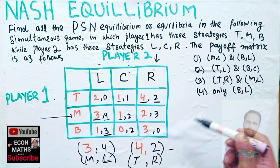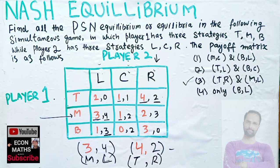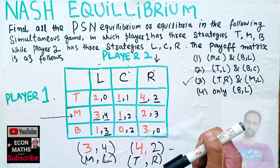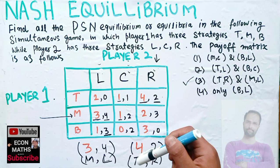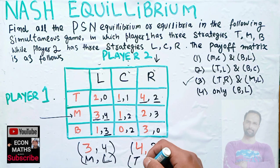This question has multiple Nash equilibria. By Nash equilibrium we mean each player's strategy is optimal when considering the decisions of other players. It states that a player can achieve the desired outcome by not deviating from their initial strategies — no person has a unilateral incentive to change their strategy. These are the optimal strategies and outcomes.